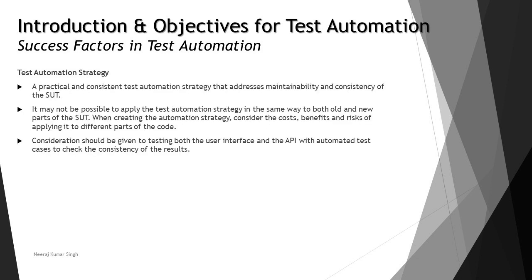Test automation strategy is another factor to consider for the success of automation. A strategy will determine the overall outline for test automation. It covers maintainability and consistency of the SUT — how long you will be maintaining it, what revisions or changes are required, and how consistent the product will remain. You need to consider how many minor or major changes will impact the product, because all your automation tests need to be updated accordingly, and the same maintenance applied to the product must be applied to your automation scripts.